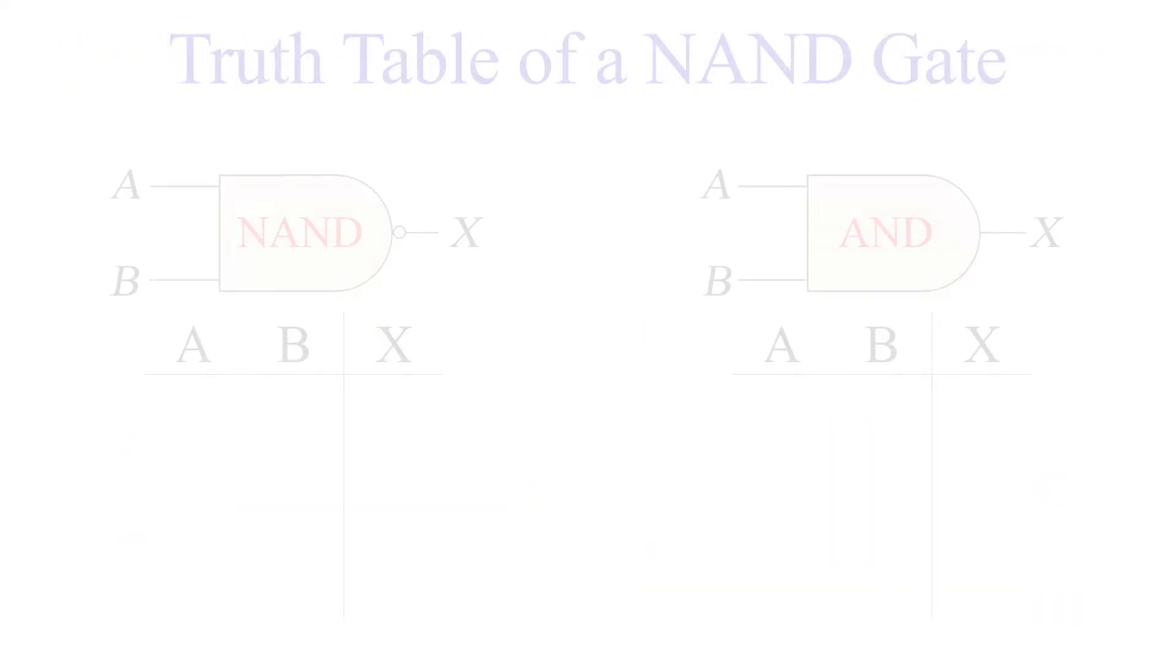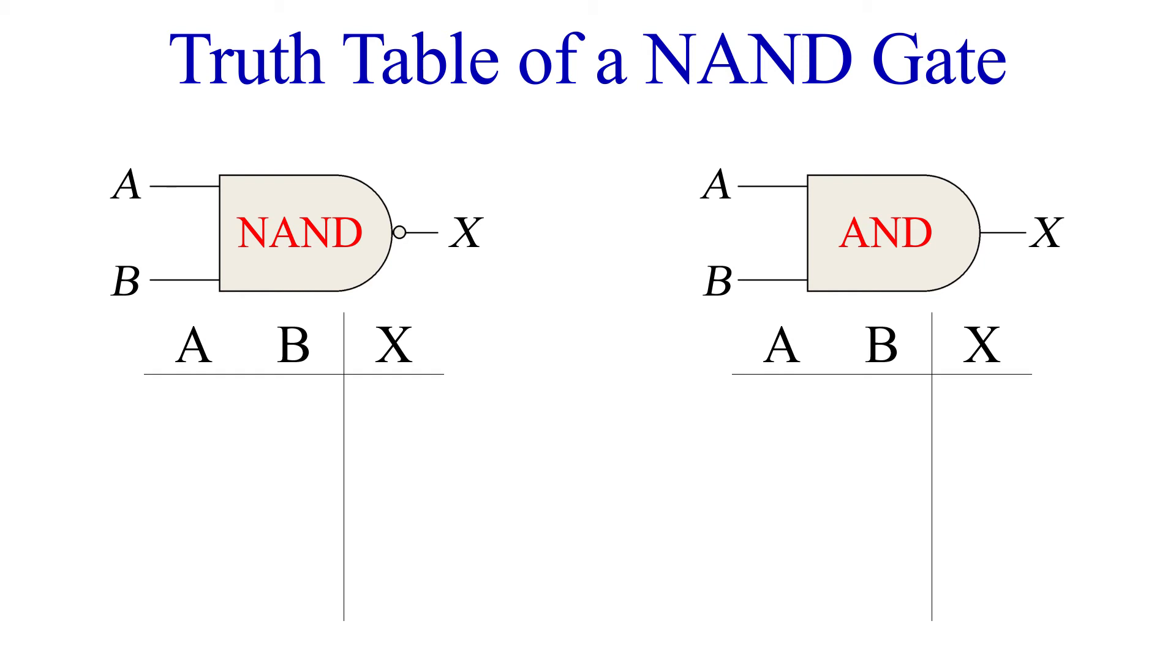So let's jump right to the truth table. Next we'll use a two input NAND gate. This means four possible input combinations. We'll also look at the AND gate at the same time.